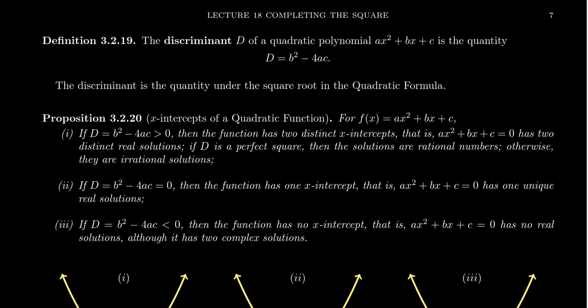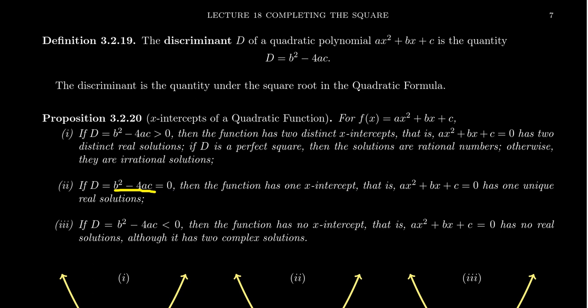Another possibility is when your discriminant is equal to zero — b squared minus 4ac equals zero. When we take the square root of zero, that is zero, so the solution to the quadratic equation will be a rational number. You only get one solution, because adding or subtracting zero does the same thing. In that situation, your solution is just negative b over 2a. You get one solution to ax squared plus bx plus c equals zero. Graphically, the graph would have only one x-intercept. When your discriminant is zero, the polynomial is already a perfect square, and you could solve it by factoring.